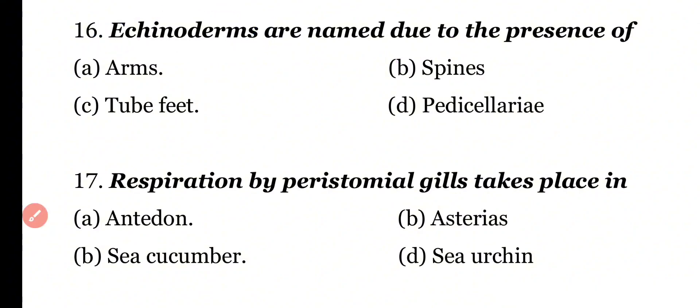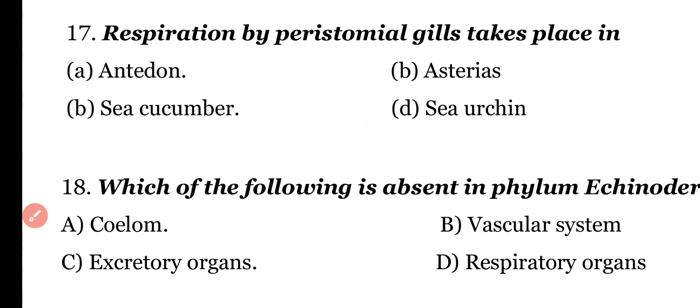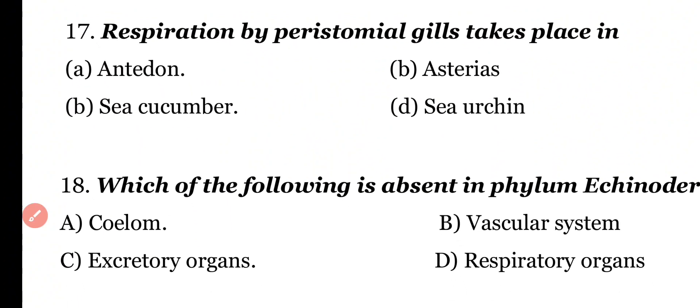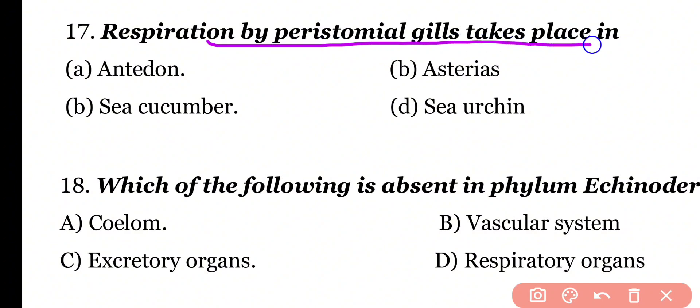Question 17: Respiration by peristomal gills takes place in Antedon, Asteroidia, or Sea Urchin? Correct answer is Option D. Class Echinoidia member Sea Urchin respires through peristomal gills.